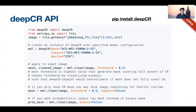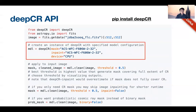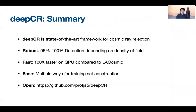DeepCR is on GitHub and we have a pip-installable package. The API is very simple and serves as a drop-in replacement for LaCosmic. We have a trained model available for Hubble ACS and are looking at other instruments as well. I'll leave the summary there, and hopefully I'll be able to take questions online. Thank you.